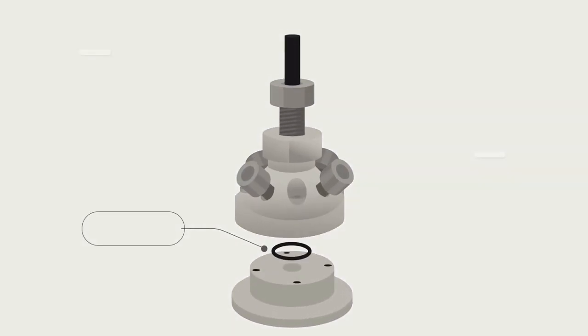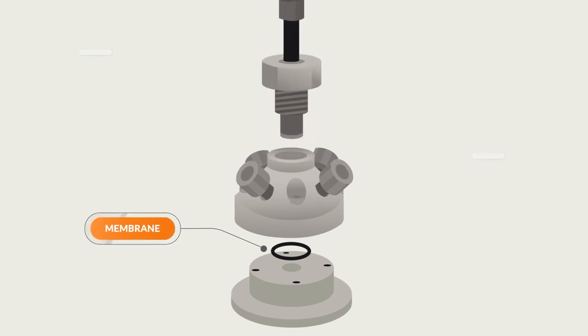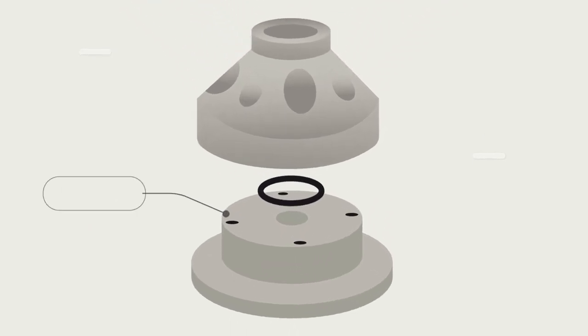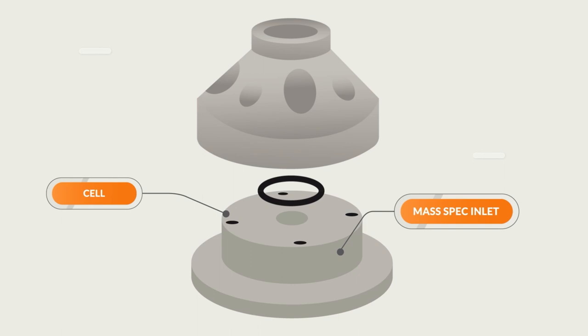A nanoporous pervaporation membrane separates the electrochemical cell from the vacuum chamber of the mass spectrometer. Gaseous and volatile liquid phase products pass through the membrane into the mass spectrometer.